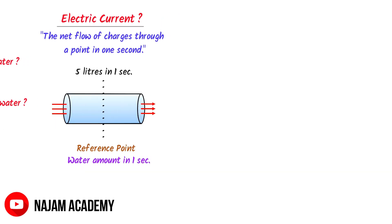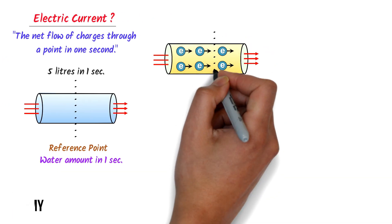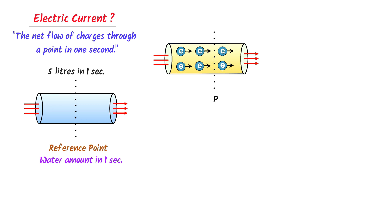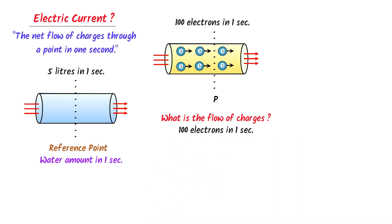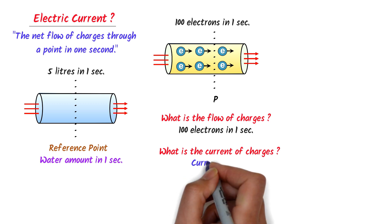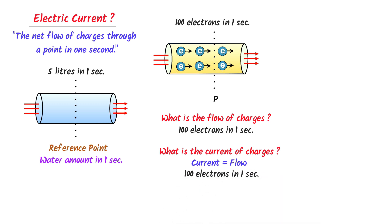Similarly, consider a metal rod. Let me select point P. I am interested in how many electrons pass through this point in one second. Let there be 100 electrons passing through point P in one second. What is the flow of electric charges? The flow of electric charges is 100 electrons per second. What is the current of electric charges? The answer is again 100 electrons per second, because current and flow of something are the same thing.